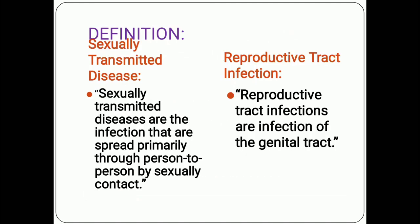For better understanding, sexually transmitted diseases are defined as infections that are spread primarily through person-to-person sexual contact. Reproductive tract infections are infections of the genital tract — any dysfunction regarding our reproductive system which causes infection. So who causes these STDs and RTIs?